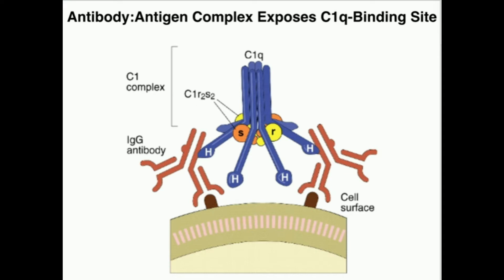C1 — the first complement protein — has more parts than just C1Q. It actually also has C1R and C1S, and there are two R units and two S units. Whenever C1Q becomes activated by binding to the antibody, it's going to change conformations, which affects the R subunits. The R subunits change conformation and they become active serine proteases, which clip the S subunits. When the S subunits become clipped, they become active serine proteases. When we talk about C1 activating other members of the complement system, C1S is the active serine protease that's going to do that for all other proteins.